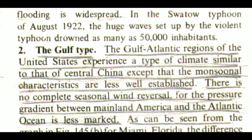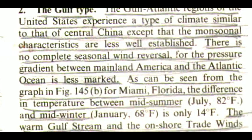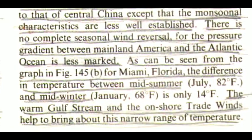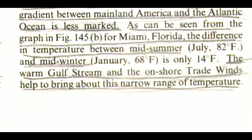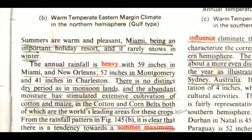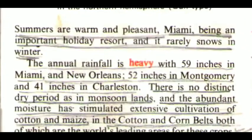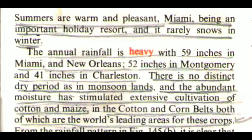The Gulf-Atlantic regions of the United States experience a type of climate similar to that of central China except that the monsoonal characteristics are less well established. There is no complete seasonal wind reversal, for the pressure gradient between mainland America and the Atlantic Ocean is less marked. As can be seen from the graph for Miami, Florida, the difference in temperature between mid-summer and mid-winter is only 14 degrees. The warm Gulf Stream and the onshore trade winds help to bring about this narrow range of temperature. Summers are warm and pleasant, and it rarely snows in winter. The annual rainfall is heavy, with 59 inches in Miami and New Orleans, 52 inches in Montgomery, and 41 inches in Charleston.